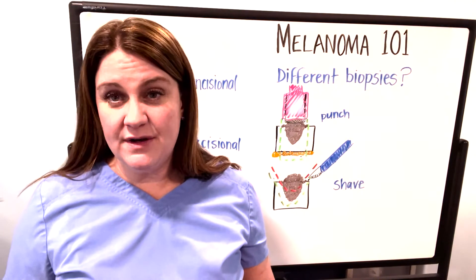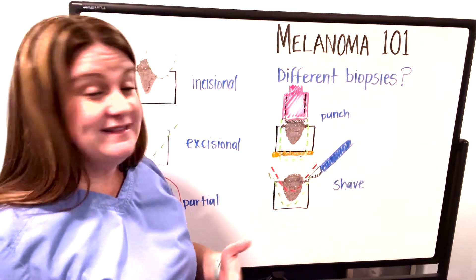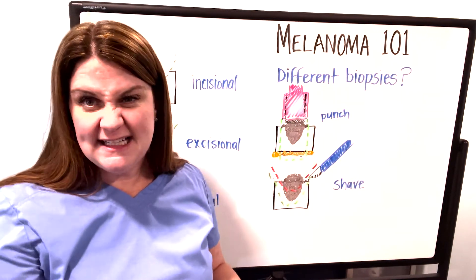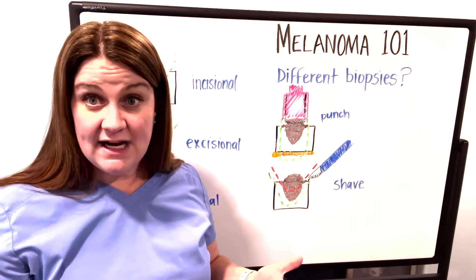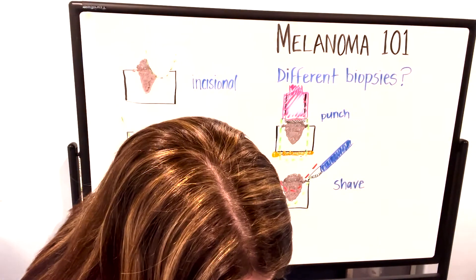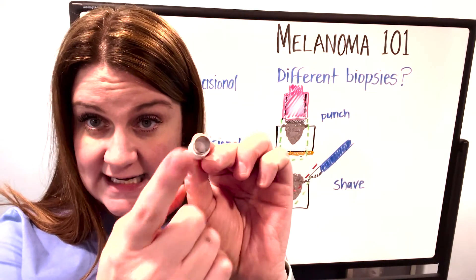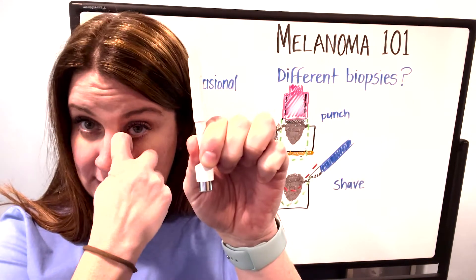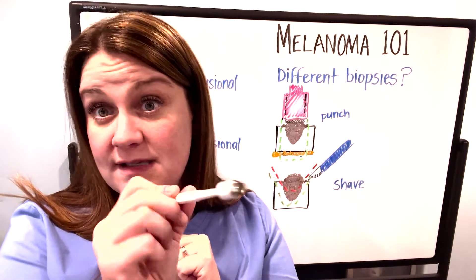Now let's talk about the different methods used to perform these excisions. The method we like the most gives a full-thickness skin sample — including the epidermis, the dermis, and the hypodermis, which is the fatty layer underneath the dermis — and hopefully captures the entirety of the mole. This is called a punch biopsy. Because my drawing is extremely terrible, I actually have an example of a punch biopsy here. This is a huge one — one whole centimeter — you will almost never see a biopsy done with one this size, but if the mole is this big then we would certainly use it.